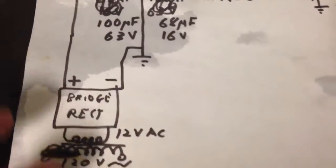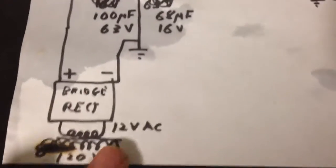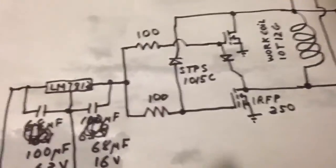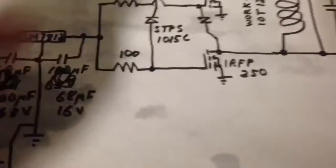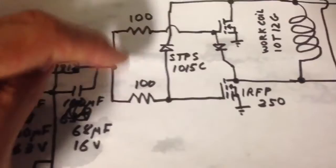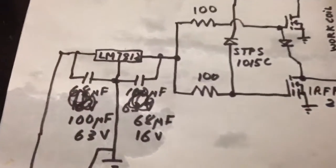I got a bridge rectifier set up with a 12 volt AC transformer that drives the gate so we don't overvolt the gate on these IRFB250s. I reduced the resistances on the gates to 100 ohms. It seemed to work better for whatever reason. There's the voltage regulator which is an LM7812.